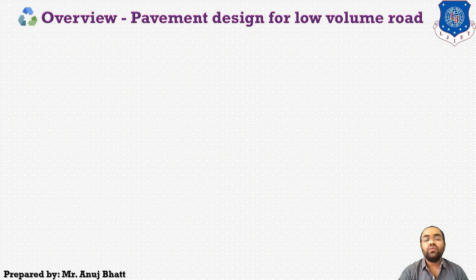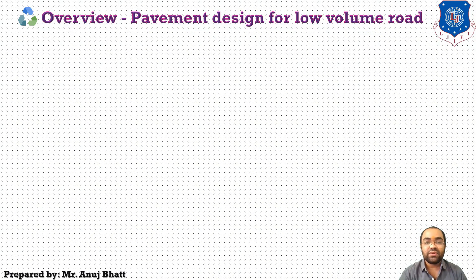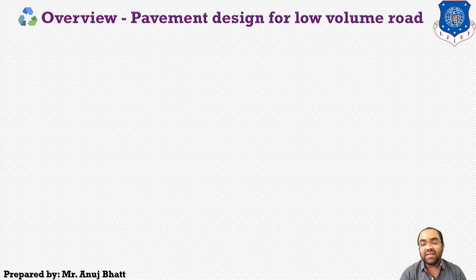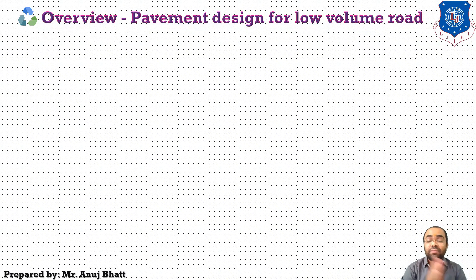The next topic is an overview of pavement design for low volume roads. A large proportion of India's villages have been connected with all-weather roads due to efforts by the National Rural Road Development Agency, the Ministry of Rural Development, and the Government of India. Rural roads usually carry low volume traffic consisting mostly of light transport vehicles such as agricultural tractors, trailers, light goods vehicles, buses, animal-drawn vehicles, auto-rickshaws, motorcycles, and bicycles. Some rural roads may also have light and medium trucks carrying sugar cane or quarry materials.